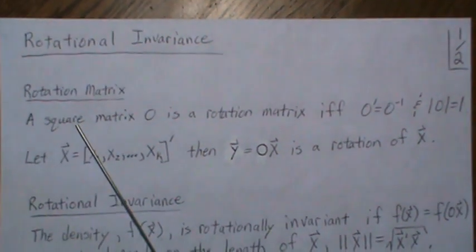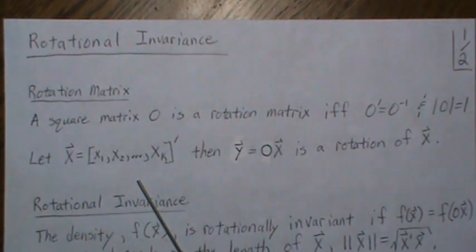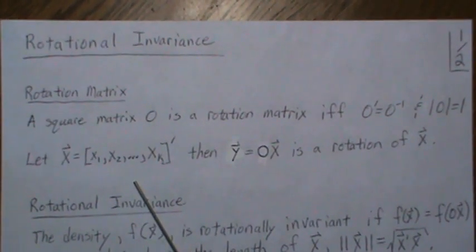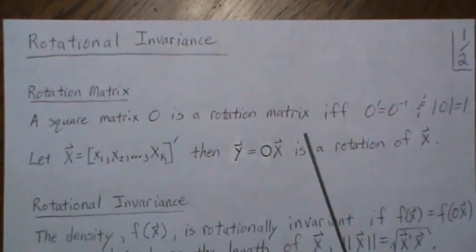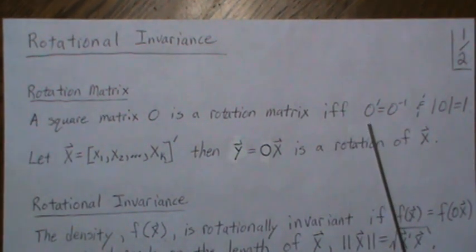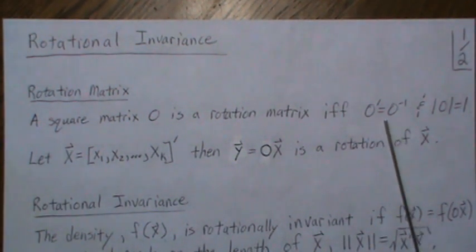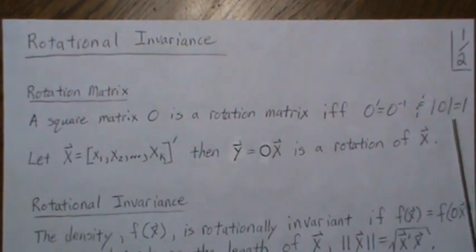So first let's look at what a rotation matrix is. We're not going to go into depth, but a rotation matrix, it's a square matrix and it's a rotation matrix if and only if the transpose is equal to the inverse of the original square matrix O and the determinant is one.